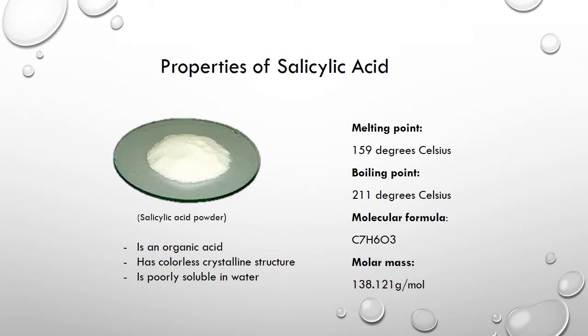There are several properties of salicylic acid: it is an organic acid that has a colorless crystalline structure and is poorly soluble in water. It has a melting point of 159 degrees Celsius and a boiling point of 211 degrees Celsius.